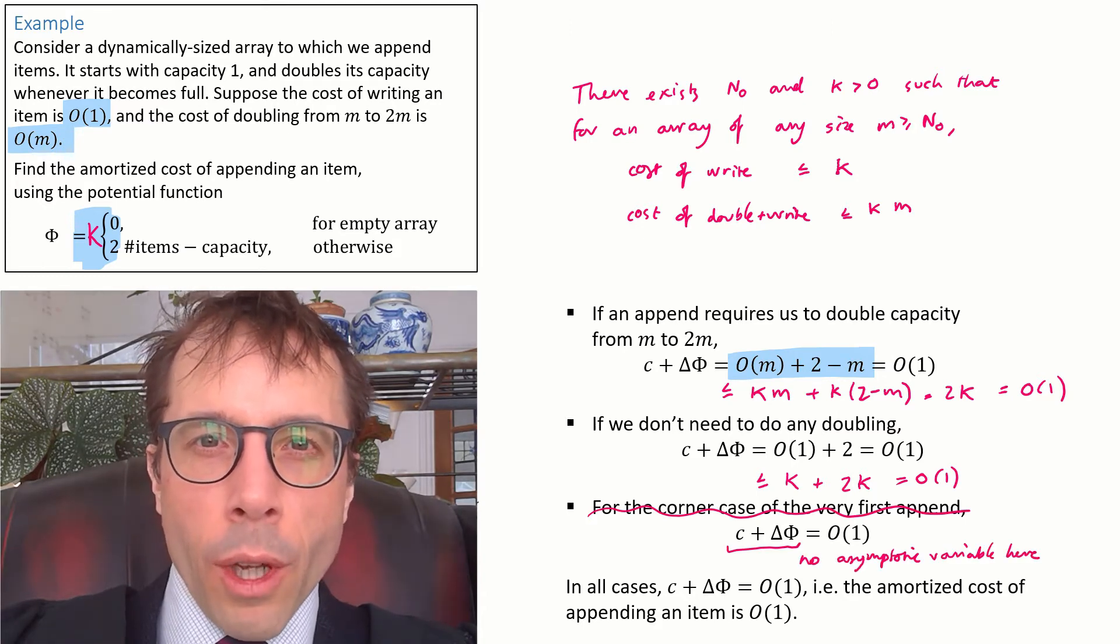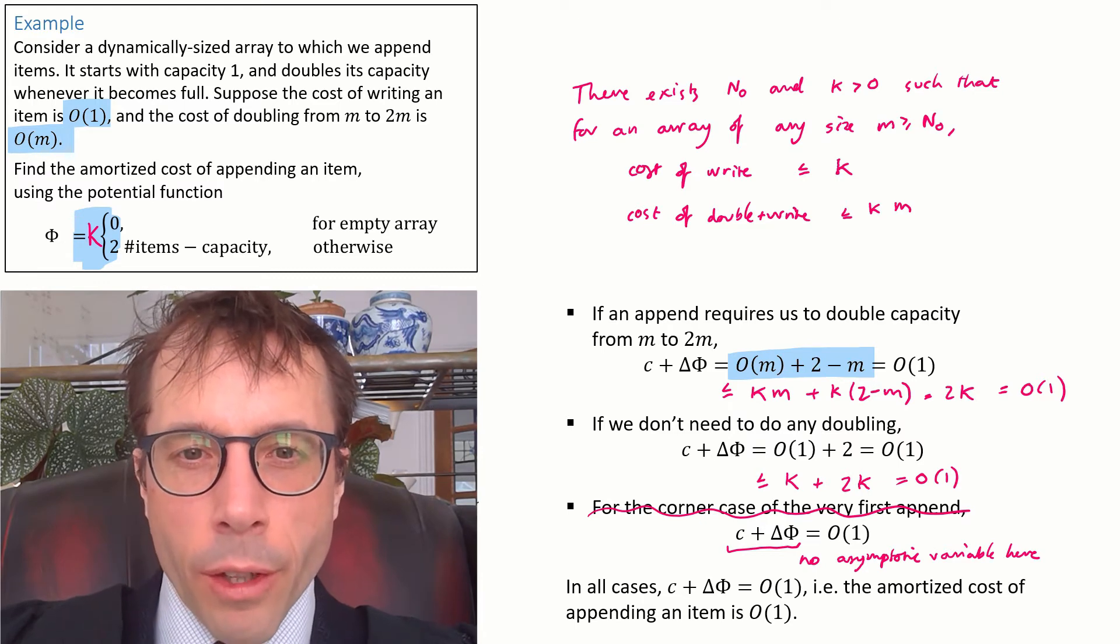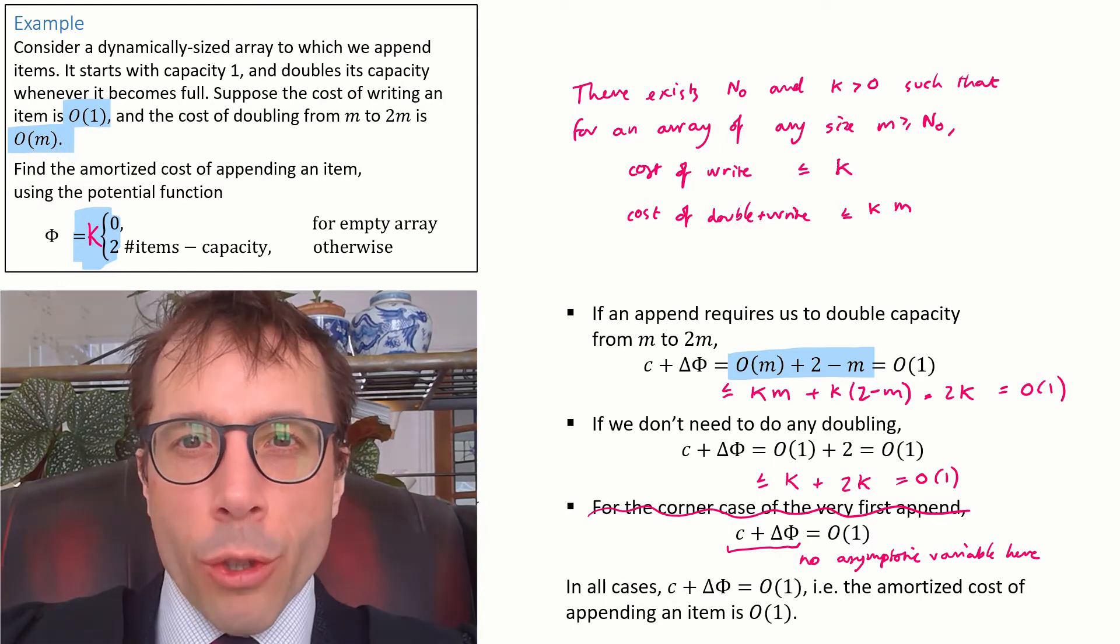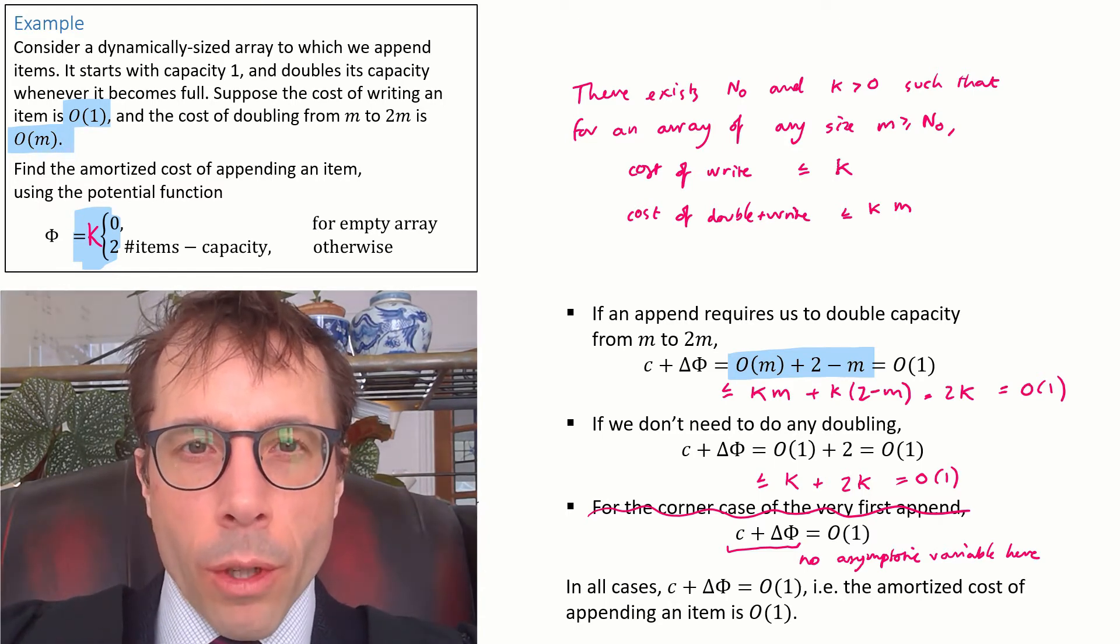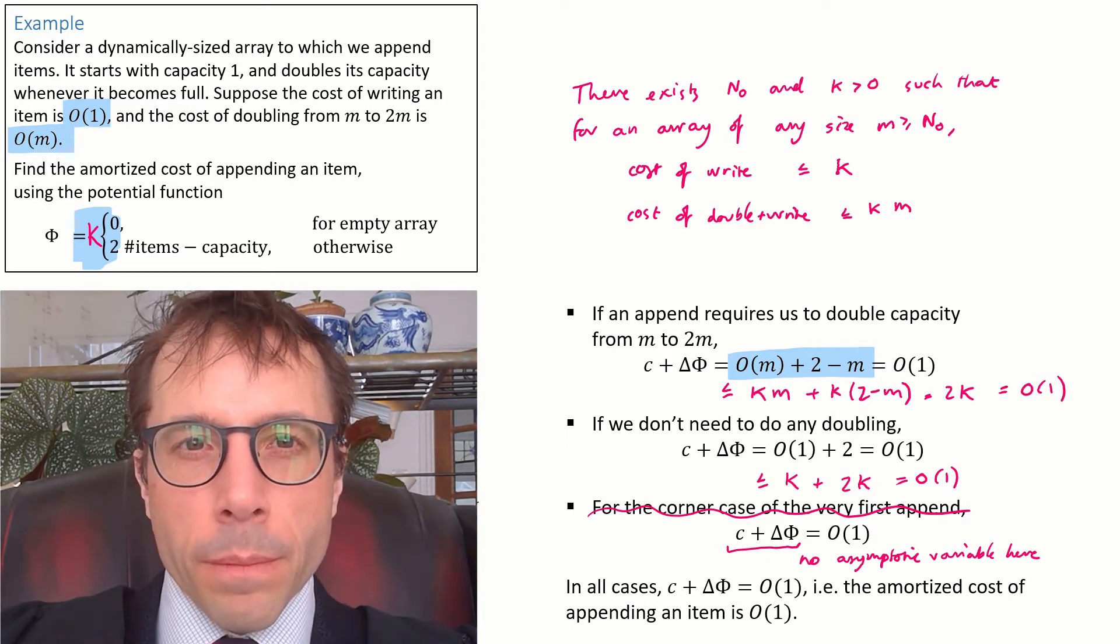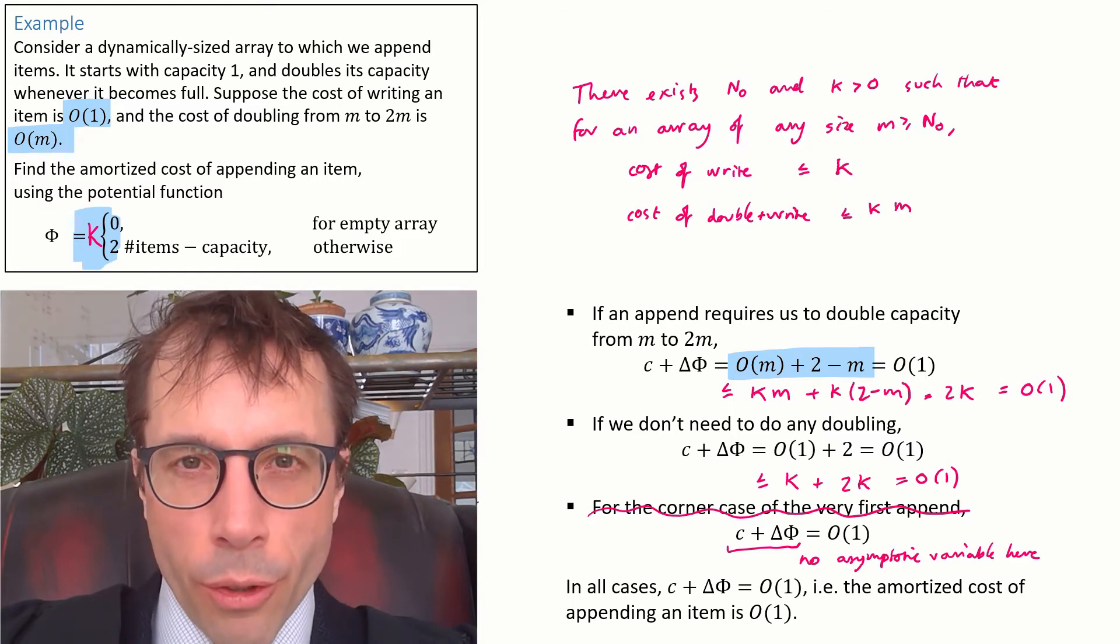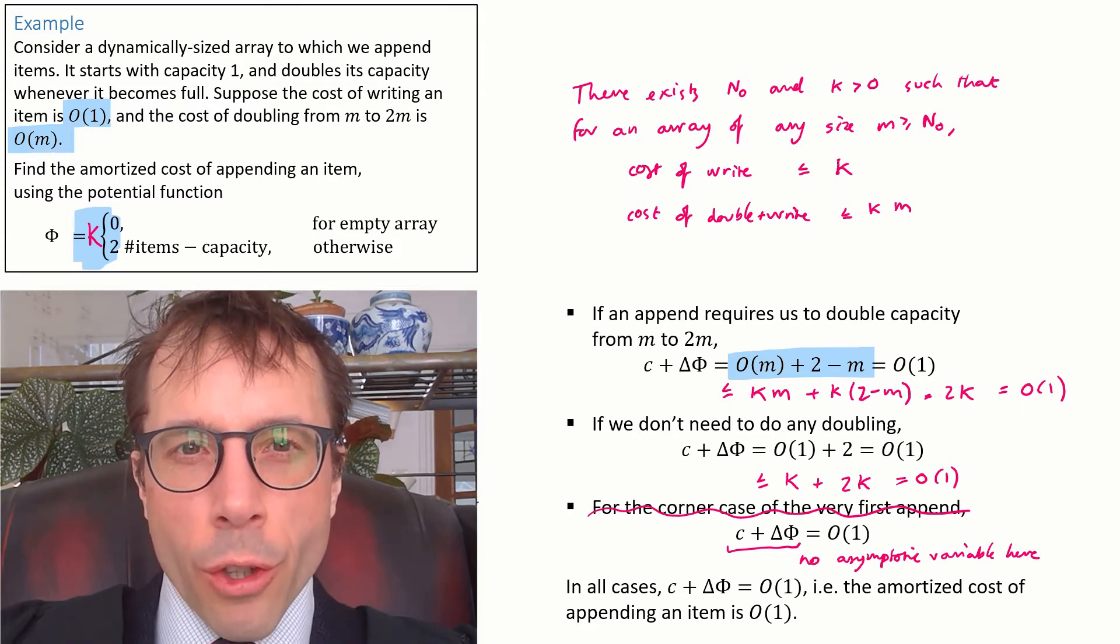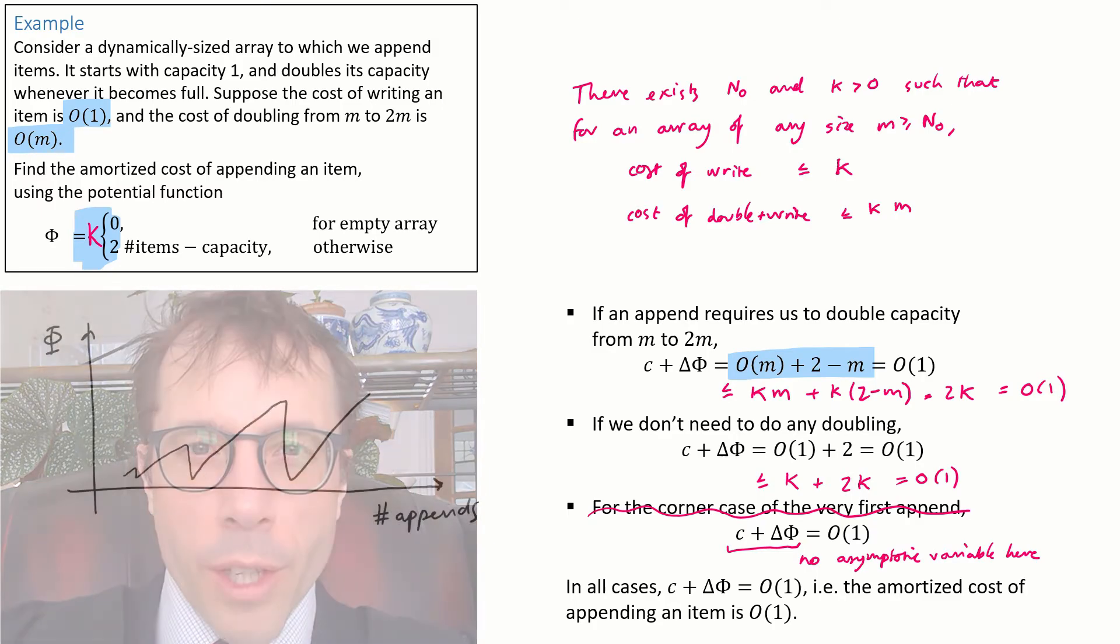Technically the third case is pointless. There's hardly any point even bothering to write out anything here except for these two cases cover every single append apart from the initial append. Okay, so the conclusion we come to in the end that every single append is big O of 1 is valid. You're totally welcome to use the sloppy notation by the way. All this stuff about kappa and the precise definition of big-O notation is only so that you feel justified in what would otherwise be a crazy thing to write out.